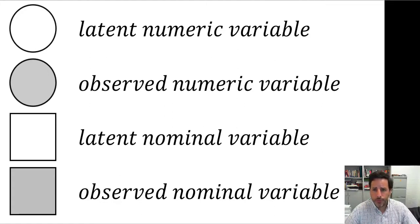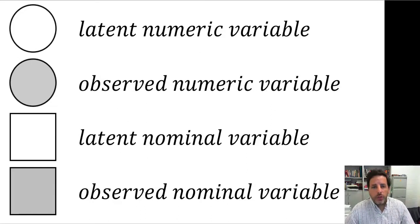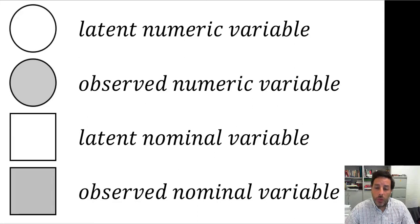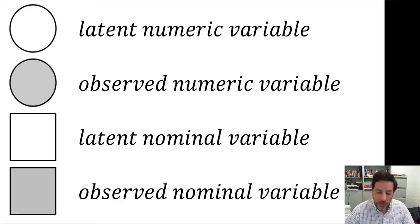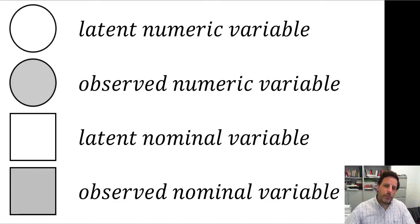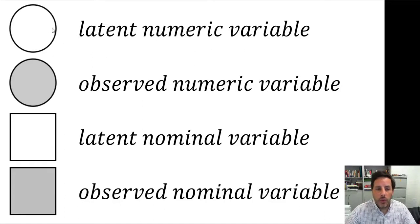The shading of the node indicates whether the variable is one we're going to observe in a study because we're going to measure it, or whether it's a latent variable. Latent variables are not measured because, for example, it could be something we can't possibly measure, but we claim it exists and produces an effect on other variables. It could be an abstract construct like intelligence — we may measure intelligence with IQ tests or different items, and all these items will be a measure of the construct IQ.